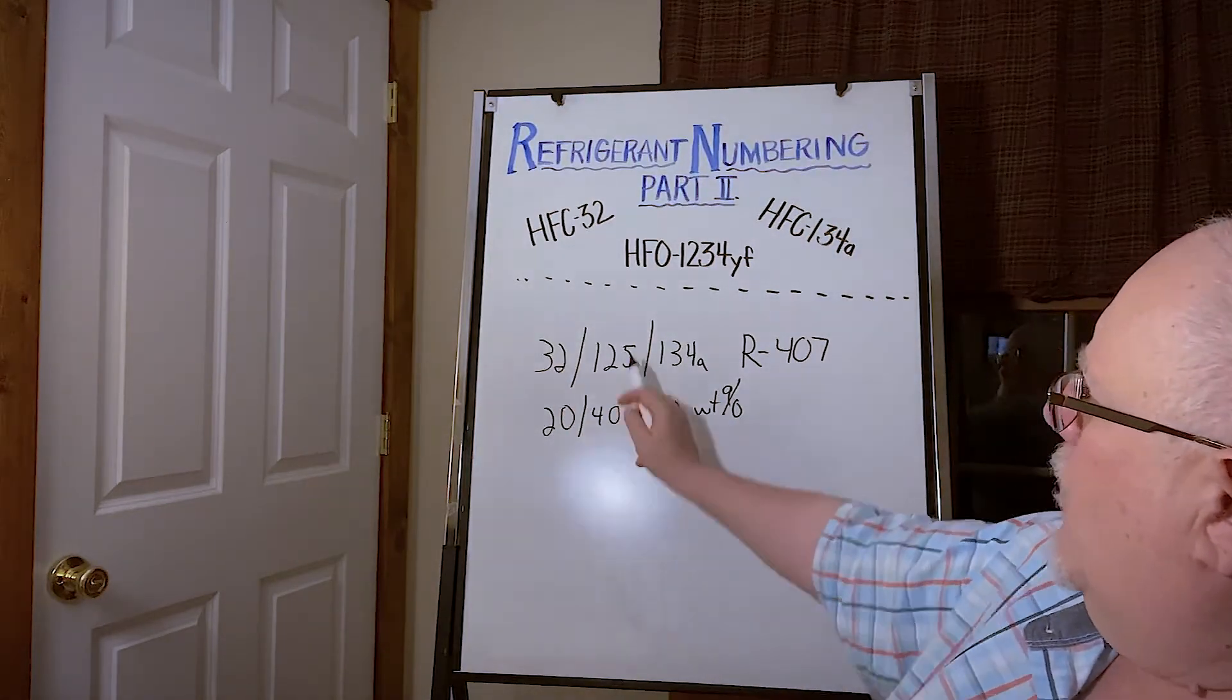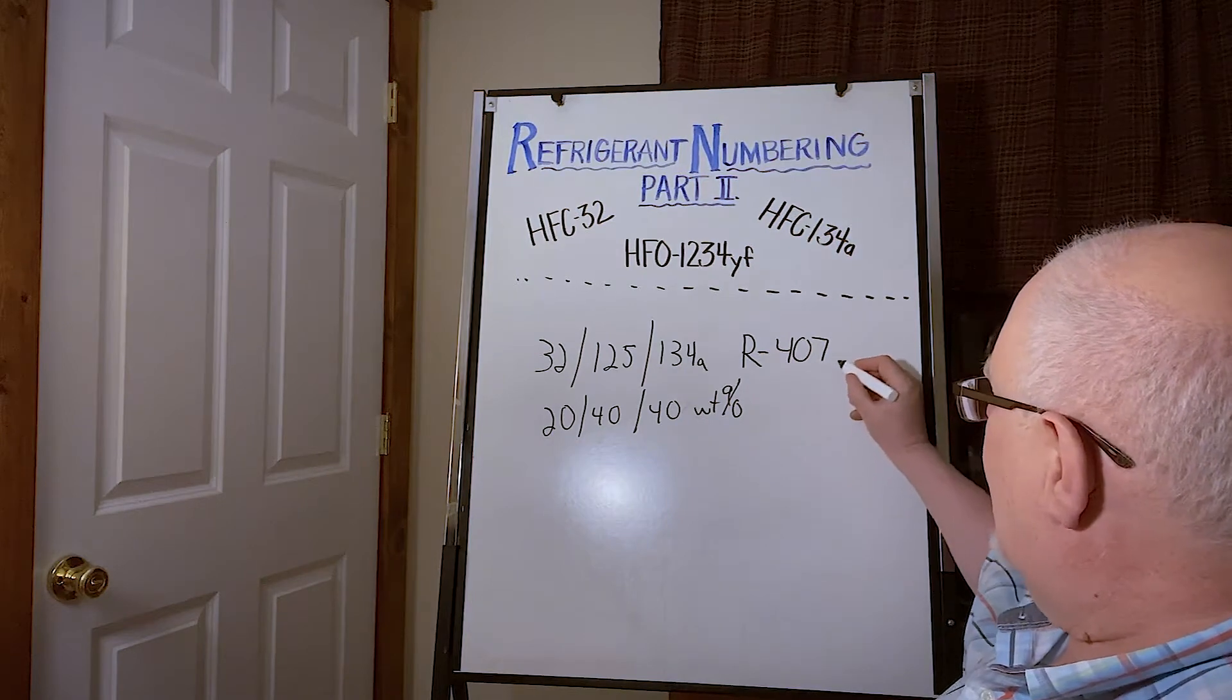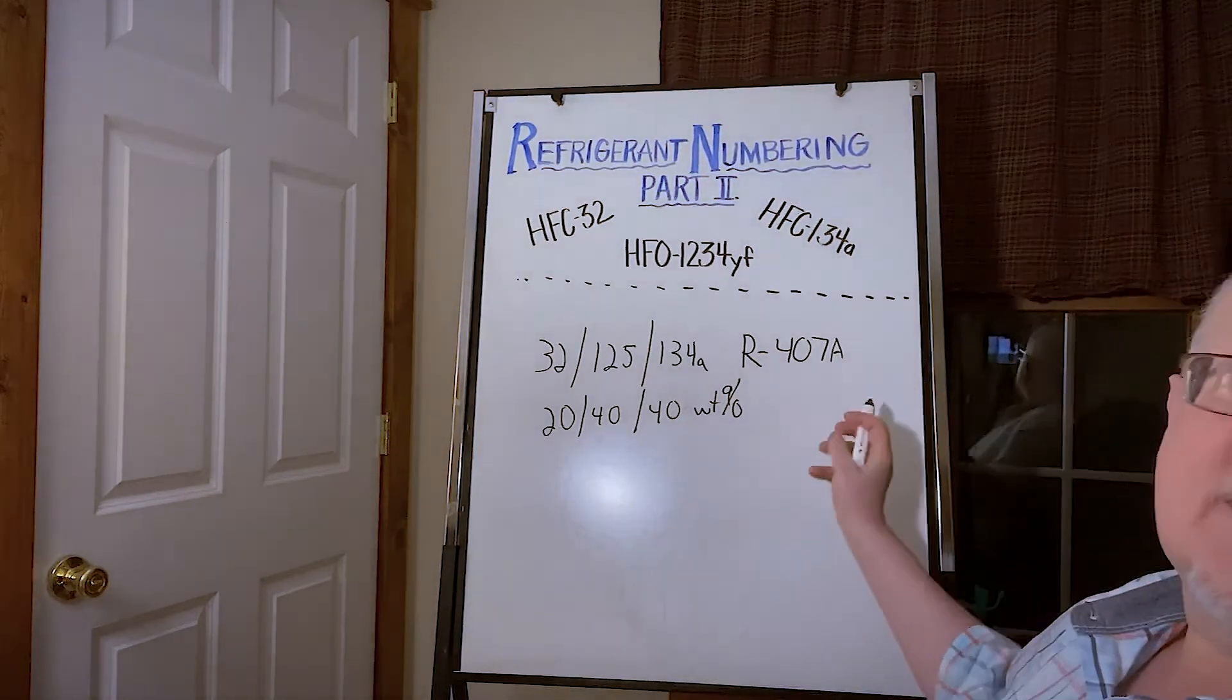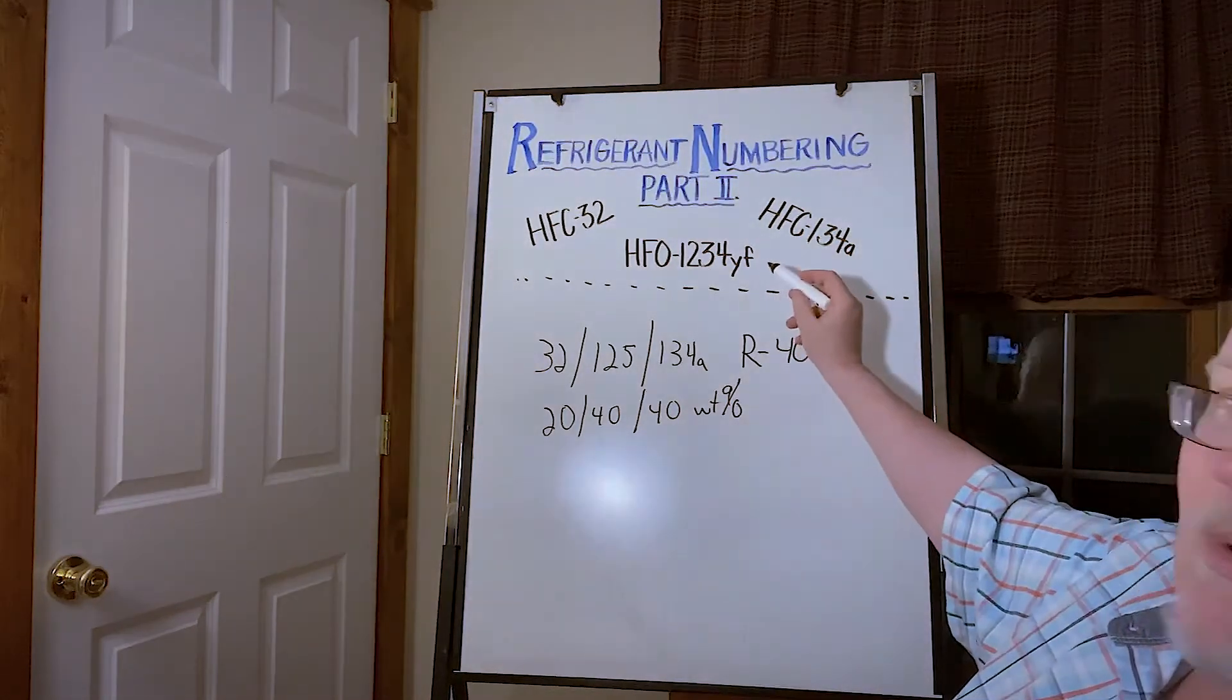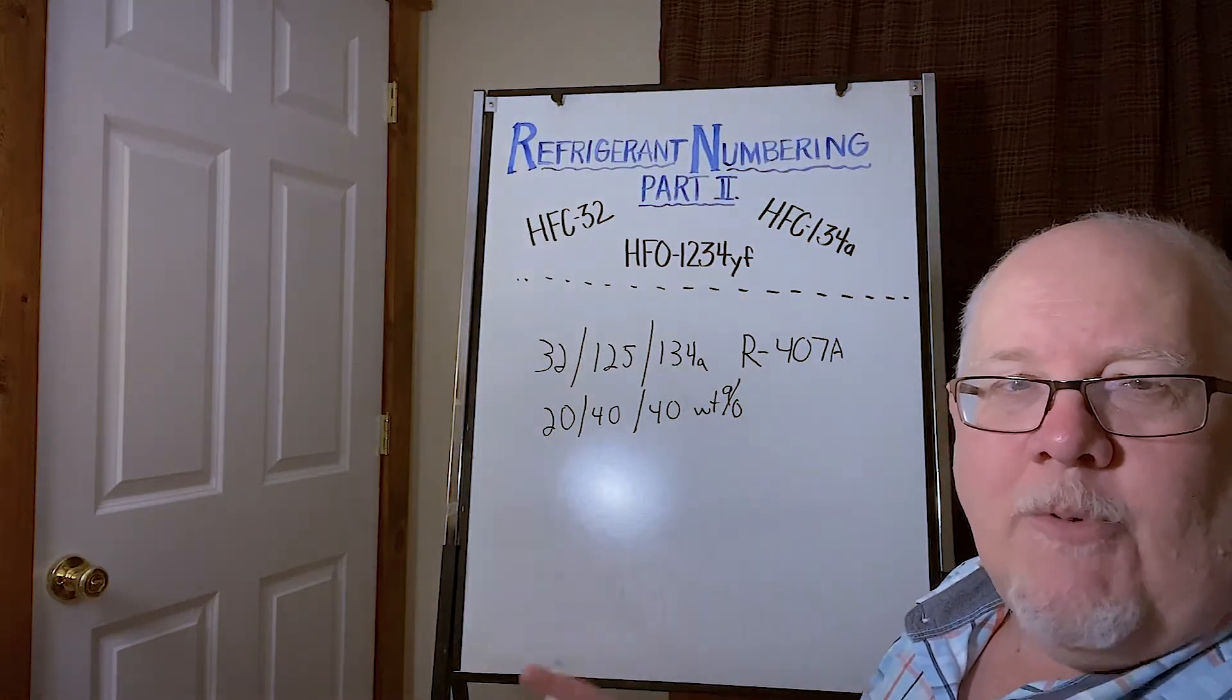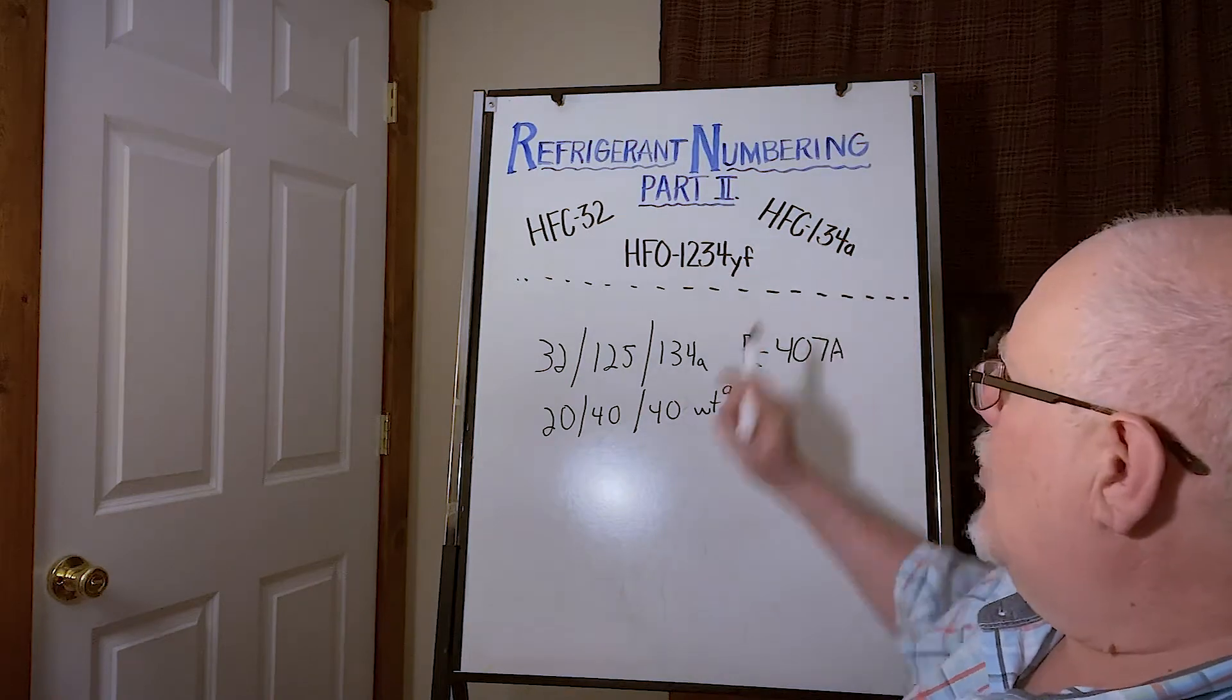20% HFC-32, 40% HFC-125, 40% HFC-134A. And that got the designation 407A. Notice this is a capital A, different than the small a or the small YF we see in individual things. Important distinction. Uppercase letters designate blends. These are more for the molecules.